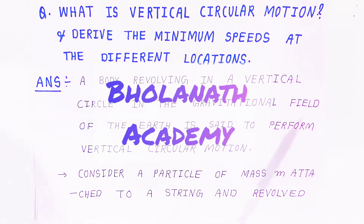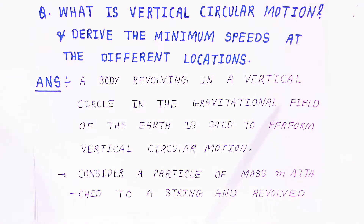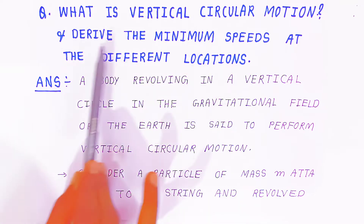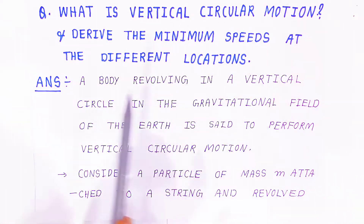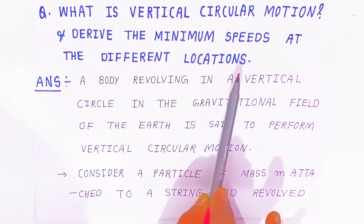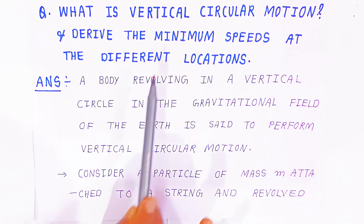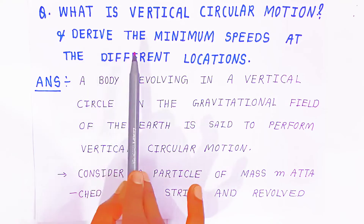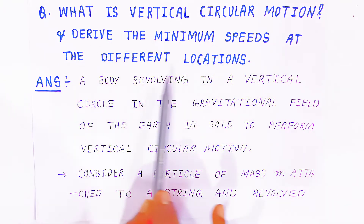Hello students, once again welcome to Bholanatha Academy. In rotational dynamics, this question is very important: What is vertical circular motion? We are going to derive the minimum speed at different locations when vertical circular motion is going on.